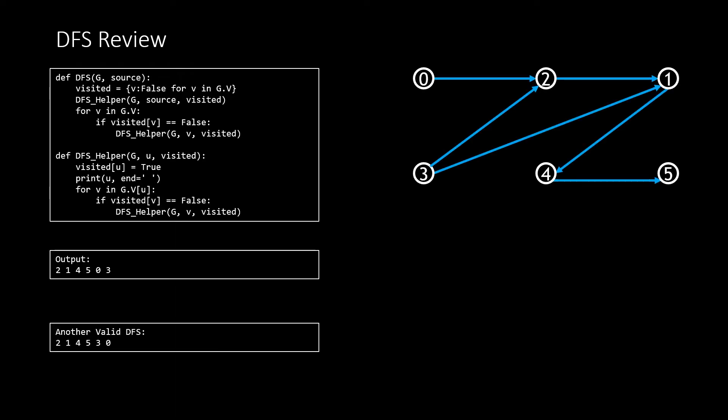We'll start with this DFS implementation, which is most useful to our brute force solution. For now it prints nodes in order of exploration. Verify that starting DFS with vertex 2 as the source produces the following traversal order. Note that the order of vertices 3 and 0 does not matter — either order is a valid depth first search.